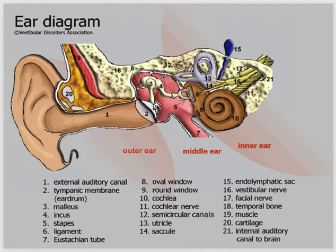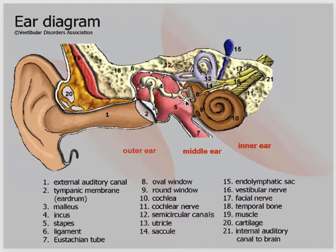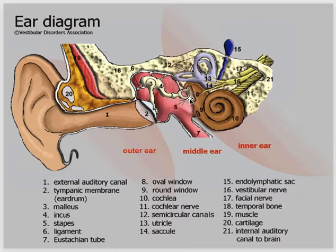You can see different numbered structures here. Number one is the external auditory meatus and this one is the tympanic membrane. There is a mnemonic called MIS — M for malleus, I for incus, S for stapes. Then there is a ligament, the eustachian tube connecting the middle ear with the pharynx, the oval window where the stapes attaches, the round window, the cochlea, and the cochlear nerve coming from the cochlea.